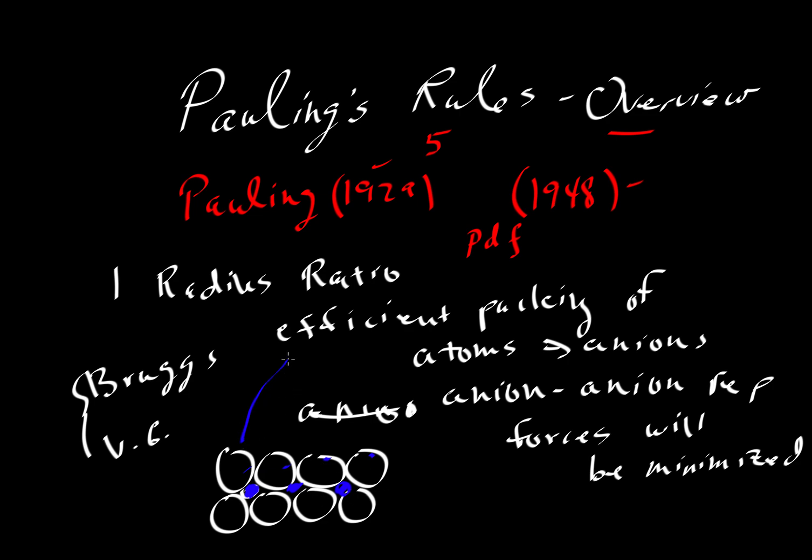So we can think about this limiting size where we can only fit something at a given size in interstices while most of the space is filled up by these larger anions. So this gives us an efficient packing which we can derive through geometry, but also by not crowding a cation with too many anions, then we limit anion-anion repulsion.